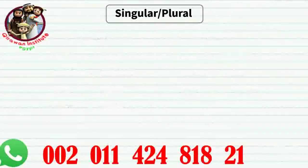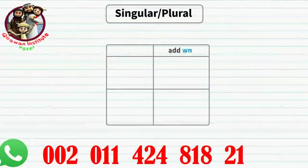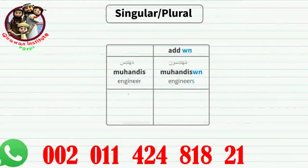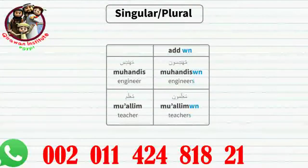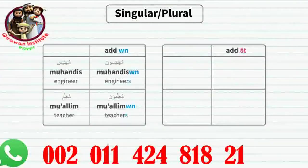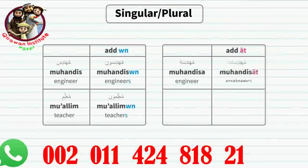The sound or regular plurals: by simply adding 'oon' at the end of a sound masculine noun, we can make a plural. For example: muhendis becomes muhendisoon, muallim becomes muallimoon. For feminine words, by adding 'at' at the end and removing the ta marbuta, we get a sound plural feminine noun. For example: muhendisa becomes muhendisat, muallima becomes muallimat.